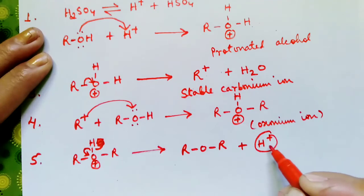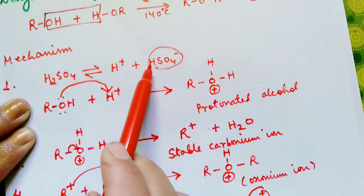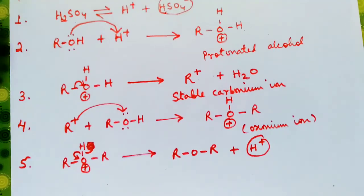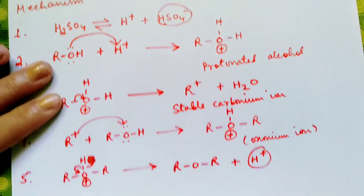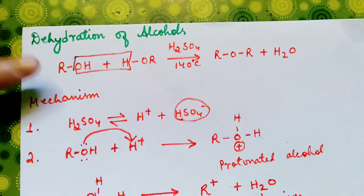And this H plus that we have in the last step again combines with HSO4 minus from the first step to generate H2SO4. So this is the mechanism of dehydration of alcohols when we prepare ether.